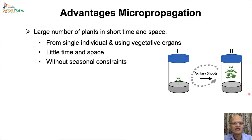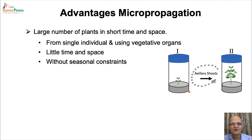Since we are using vegetative organs and multiplying them in aseptic conditions, the multiplication is not dependent on the life cycle of the plants and can be done at any time in a short amount of time. All manipulations are performed at a micro scale — very small plants are used — so large numbers of plants can be produced and maintained in small spaces. This helps in germplasm storage and conservation of endangered plant species using very little space.